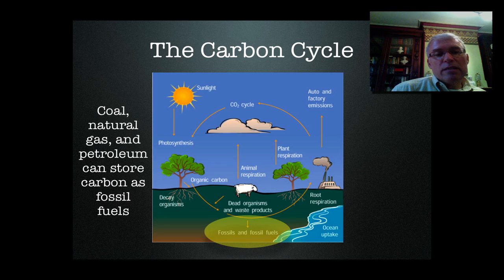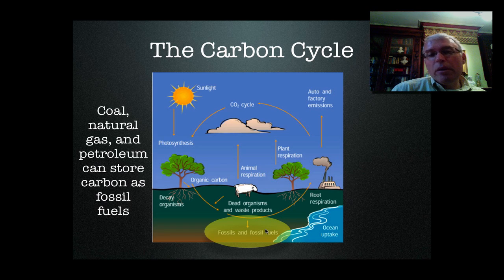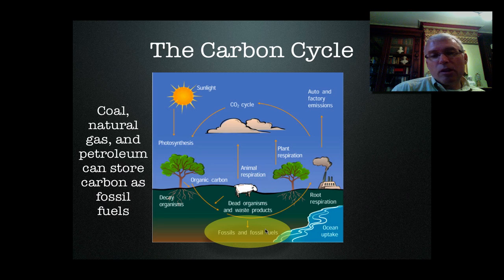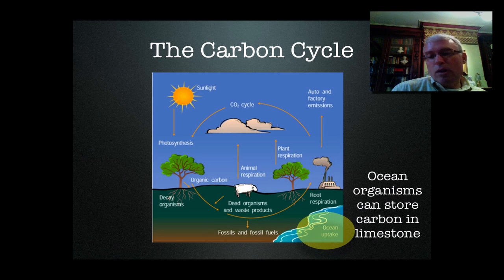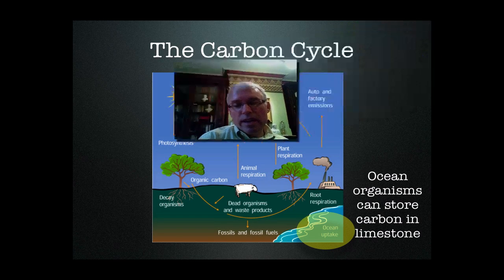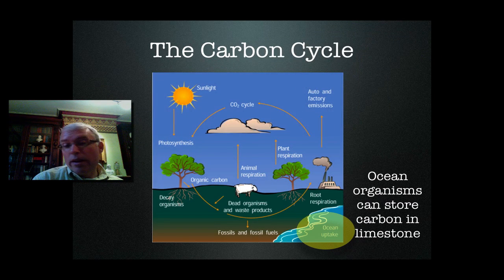Coal, natural gas, and petroleum can store carbon as fossil fuels underground, and it's stable in that form — it can stay there for millions of years and not cause problems in the atmosphere, unlike the carbon dioxide being released today by the burning of fossil fuels. Ocean organisms can also store carbon dioxide in the form of limestone. You've probably seen this limestone in the shells of things like clams and oysters, and this material can store even more carbon underwater in the form of rock.